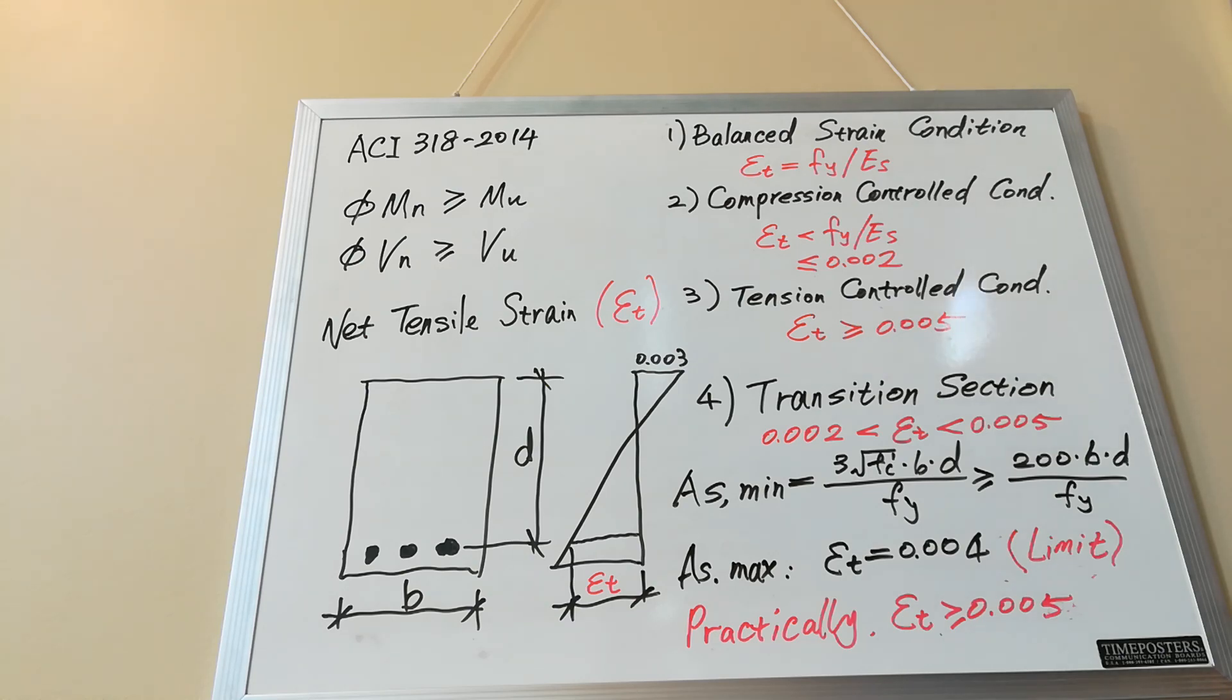The failure mode from this condition is in the form of excessive deflections and visible cracks before the structure collapses, because of the reinforcement steel yielding with elongation. So people can see the deflection and visible cracks and have time to leave the structure safely.